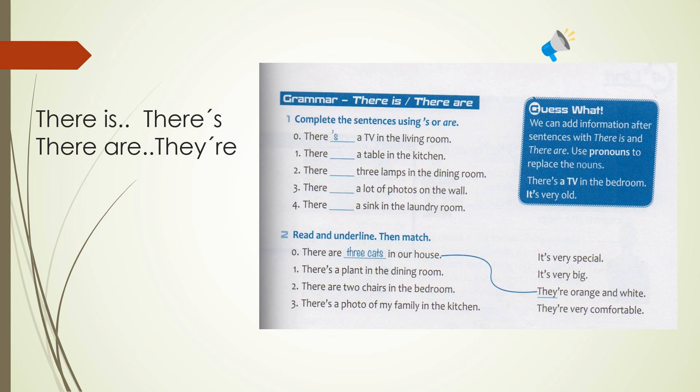Número 2, there are two chairs in the bedroom. ¿Qué cantidad me dice? Two chairs, dos sillas. Esa es la parte que subrayo porque me señala la cantidad. There are two chairs in the bedroom. ¿A dónde la voy a unir? Donde me decía comfortable, cómodo. They are very comfortable.